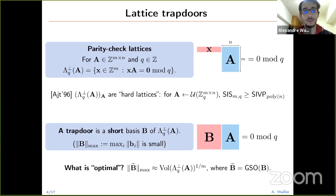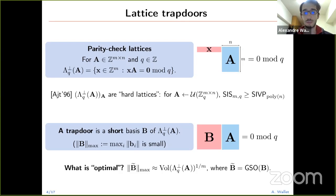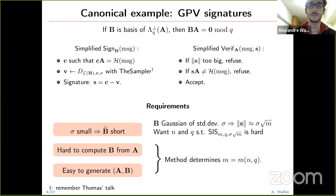A trapdoor associated to a parity check lattice is simply a short basis of this lattice, where the largest vector in the basis has a small Euclidean norm. I will often refer to the optimality of trapdoors, which I define in terms of the max norm of the Gram-Schmidt orthogonalization of the trapdoor — since in essentially all applications it is the Gram-Schmidt that matters more than the basis itself. A trapdoor is optimal when the maximum Gram-Schmidt norm is roughly around the normalized volume of the lattice.